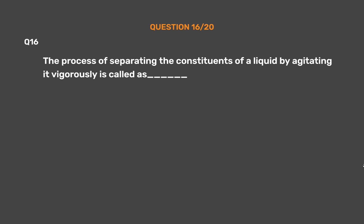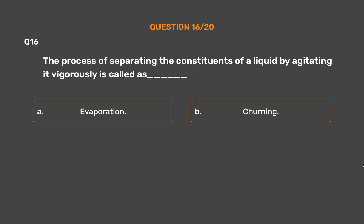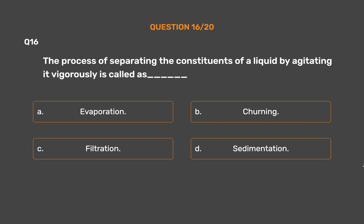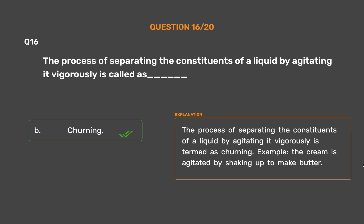Question number 16: The process of separating the constituents of a liquid by agitating it vigorously is called? Option A: Evaporation. Option B: Churning. Option C: Filtration. The correct answer is Option B, Churning. The process of separating the constituents of a liquid by agitating it vigorously is termed as churning. Example: cream is agitated by shaking to make butter.